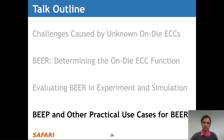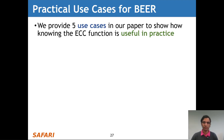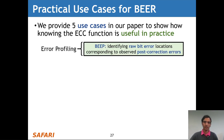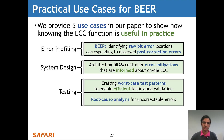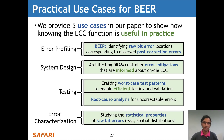Finally, I'd like to talk about BEEP and other practical use cases for BEER. In our paper, we provide five use cases. First, error profiling — BEEP shows how knowing the ECC function enables identifying raw bit error locations corresponding to observed post-correction errors. Second, system design — knowing the ECC function enables DRAM controller error mitigations better informed about on-die ECC reliability characteristics. Third and fourth, testing — knowing the ECC function enables crafting worst-case test patterns and better root cause analyses for uncorrectable errors. Fifth, error characterization — knowing the ECC function enables better studying statistical properties of raw bit errors, such as their spatial distributions.